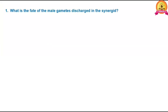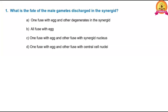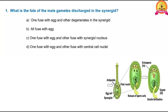The first question is: what is the fate of male gametes discharged in the synergid? This question is related to the double fertilization concept. During double fertilization in angiosperms, the pollen tube carrying two male gametes enters into the ovule either through the micropylar end, through the chalazal end, or even through the integuments.